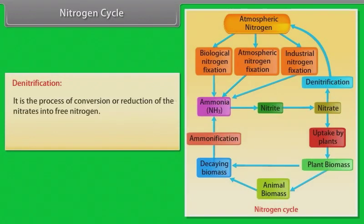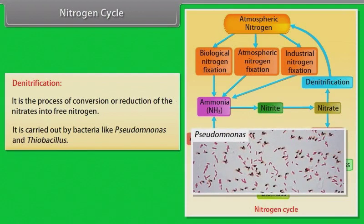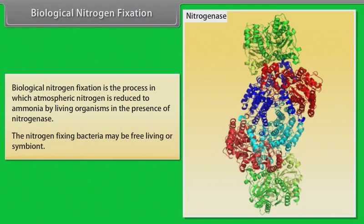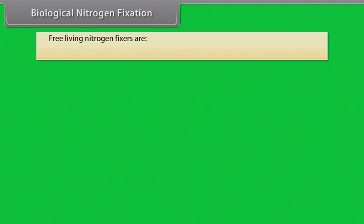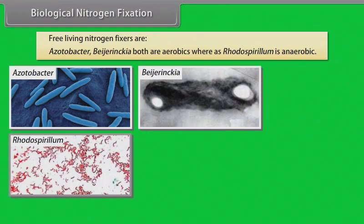Denitrification: it is the process of conversion or reduction of nitrates into free nitrogen. It is carried out by bacteria like Pseudomonas and Thiobacillus. Biological nitrogen fixation: it is the process in which atmospheric nitrogen is reduced to ammonia by living organisms in the presence of nitrogenase. The nitrogen-fixing bacteria may be free-living or symbiotic. Free-living nitrogen fixers are Azotobacter and Beijerinckia — both are aerobes — whereas Rhodospirillum is anaerobic.